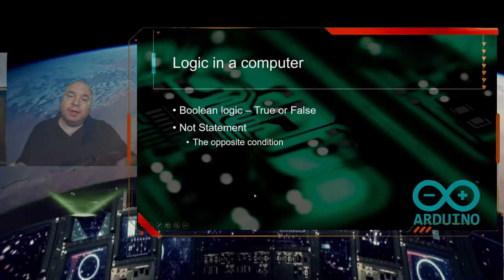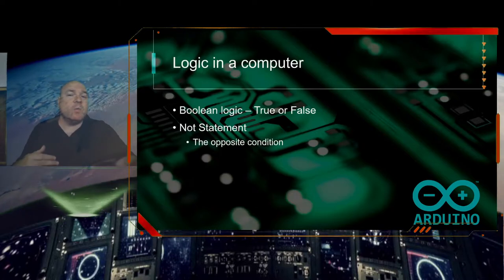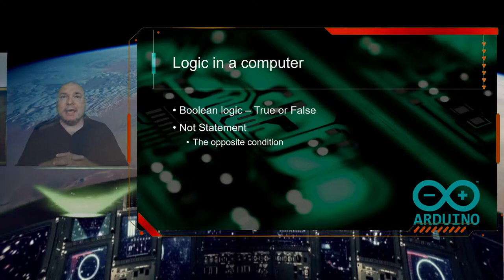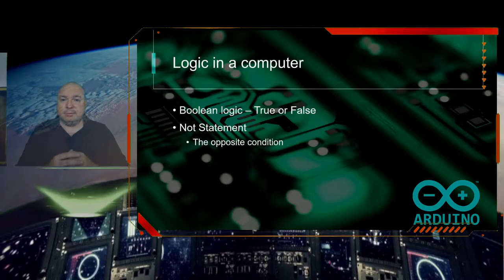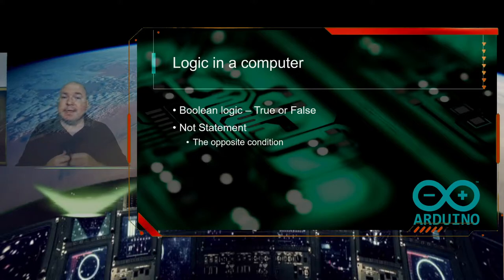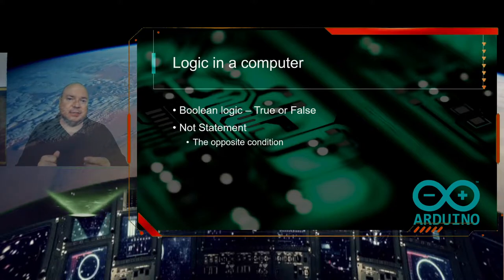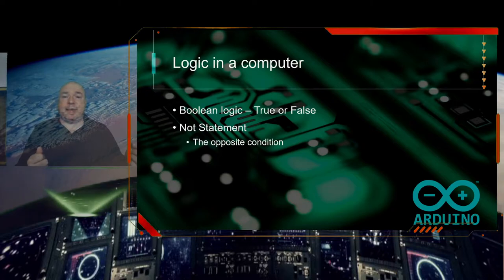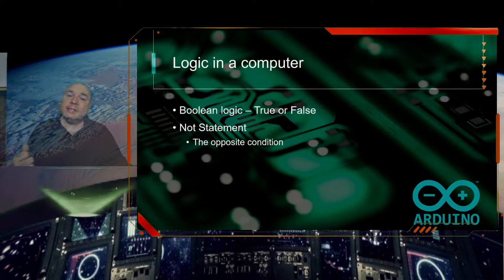The NOT statement is really important to understand when talking about logic — what does true mean versus false? For example, if I say it's raining outside, that would be a true statement if there was rain coming down. What's the opposite? The opposite condition of 'it's raining outside' would be 'it's not raining.' That's the opposite condition.